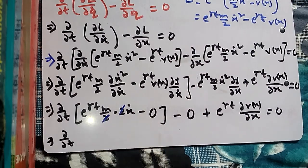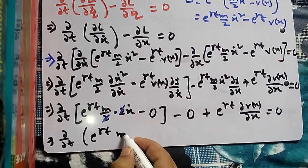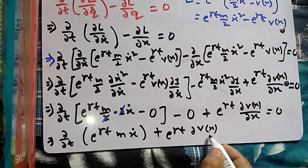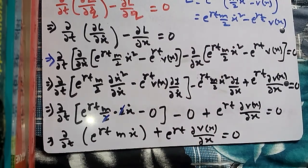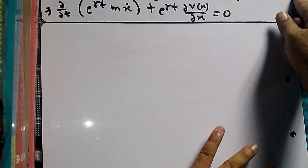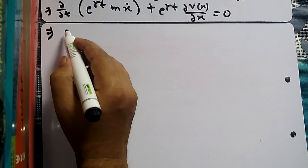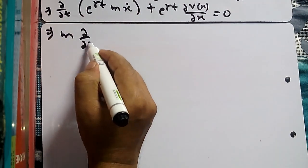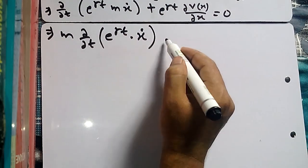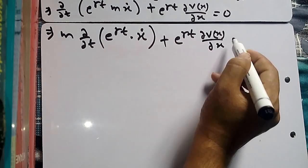The factors 2 and 2 cancel each other, leaving d/dt of [e^(gamma t) times m times x-dot] plus e^(gamma t) times ∂V/∂x = 0. Since m is a constant, we write m times d/dt of [e^(gamma t) times x-dot], plus e^(gamma t) times ∂V/∂x = 0.